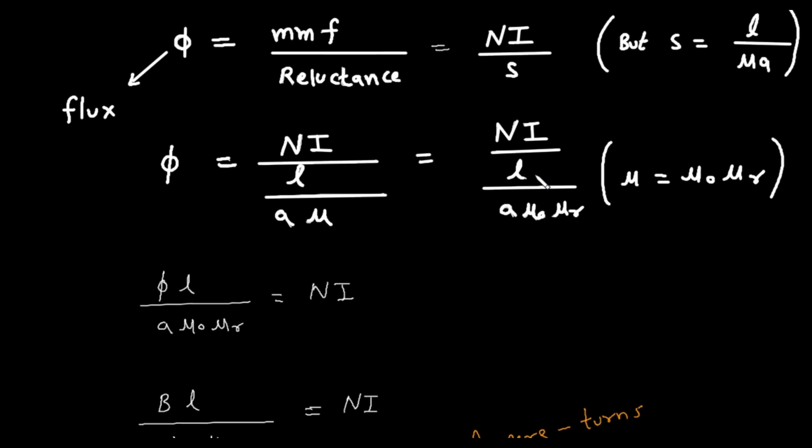Now if we take this part on left side, it will be phi into l divided by a into mu zero into mu r. We are taking this part on left side.